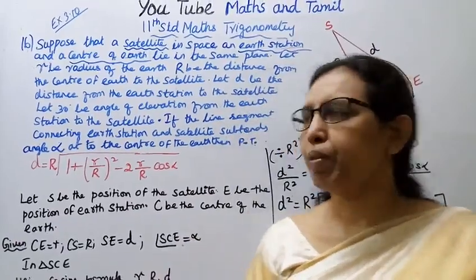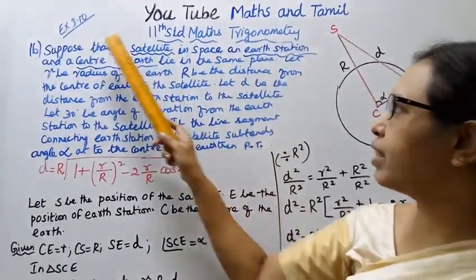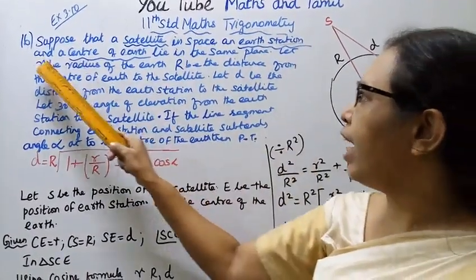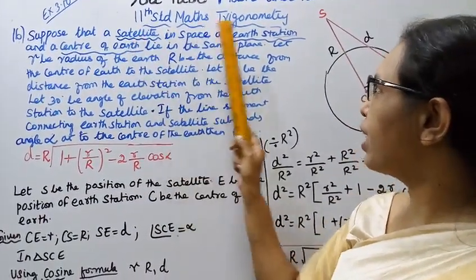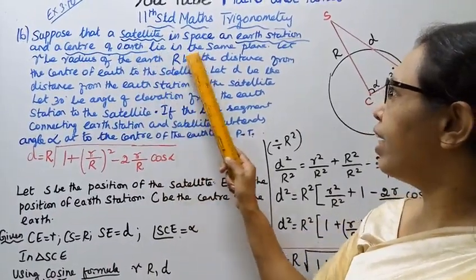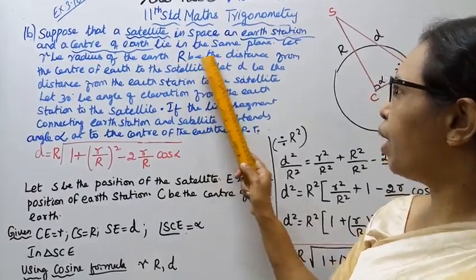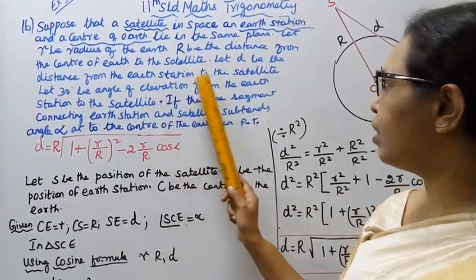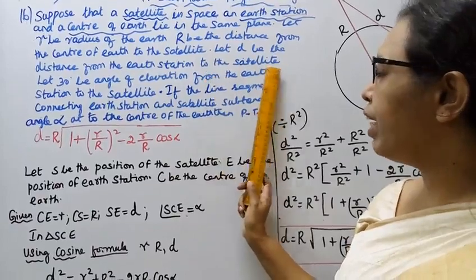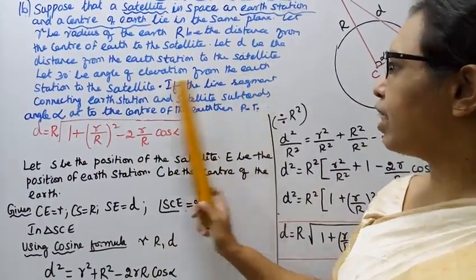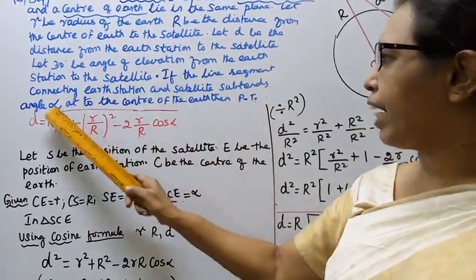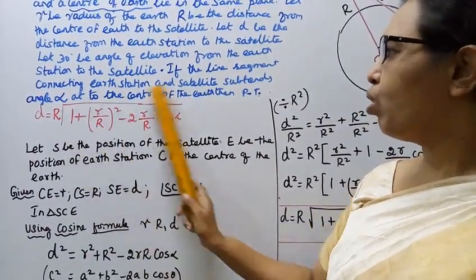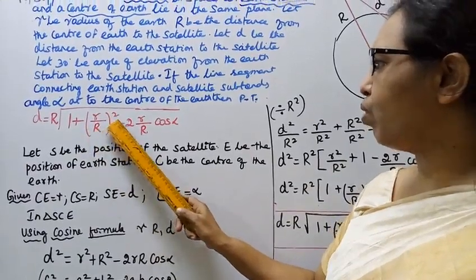Hello students, welcome to Max and Tumble channel. 11th standard math trigonometry Exercise 3.10, question 16. Suppose a satellite in space, an earth station, and the center of the earth lie in the same plane. Let small r be the radius of the earth, capital R be the distance from the center of the earth to the satellite, and small d be the distance from the earth station to the satellite. The angle of elevation is 30 degrees. If the line segment connecting the earth station and satellite subtends angle alpha at the center of the earth, prove that d equals capital R times the square root of 1 plus (r/R)² minus 2(r/R)cos alpha.